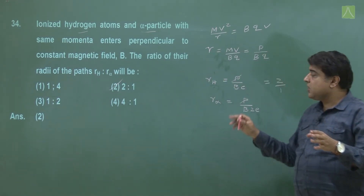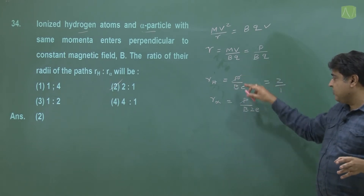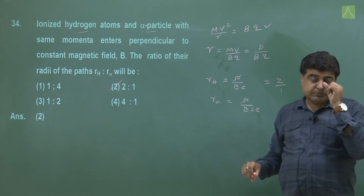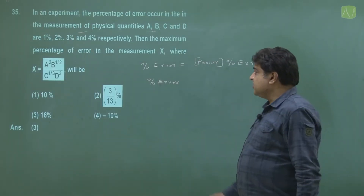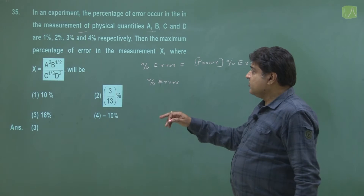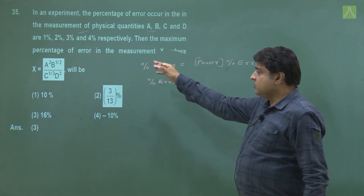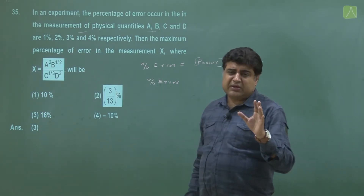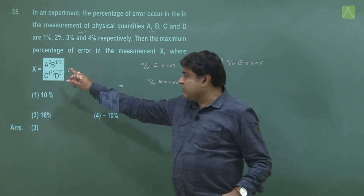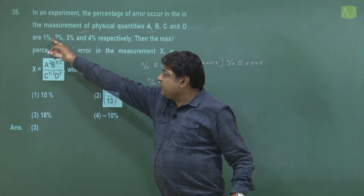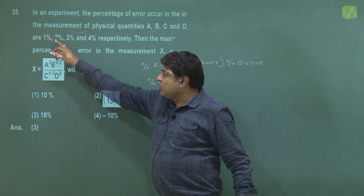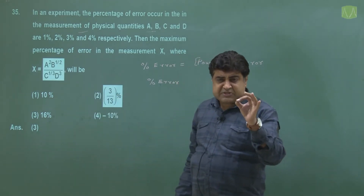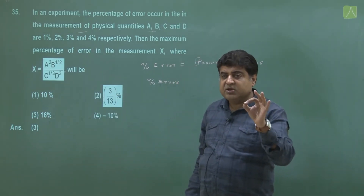This was an easy one. The formula is mv / Bq — hydrogen has charge 1, alpha has charge 2. Next question: we have a question on maximum percentage error. What we do is: multiply the power of each variable with its percentage error. Whether in division or multiplication, the percentage error is always added.